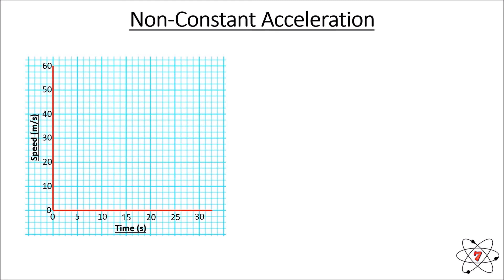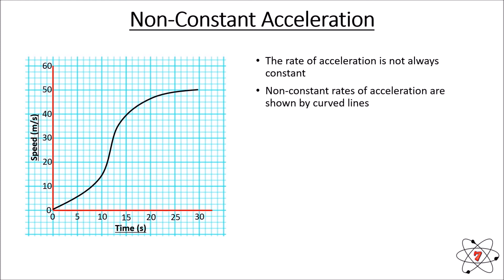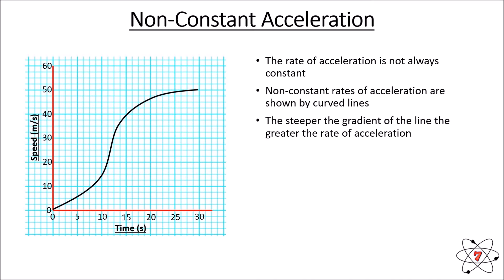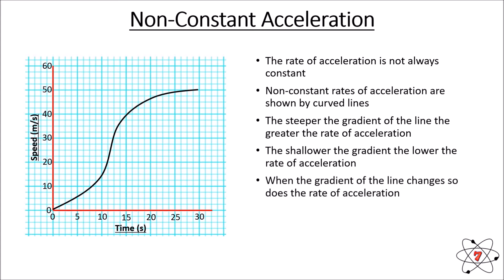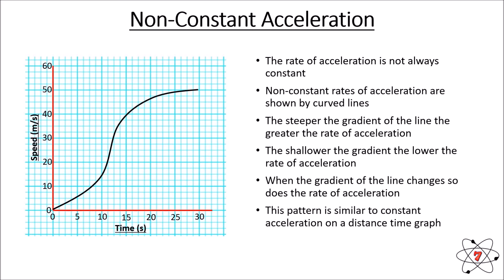Non-constant acceleration is a little different. When the rate of acceleration is not constant, it is changing, and this is shown by a curved line on a speed-time graph. The steeper the gradient of the line, the greater the rate of acceleration; the shallower the gradient, the lower the rate. When the gradient of the line changes, the rate of acceleration changes too. This pattern is most similar to what we see for a distance-time graph.